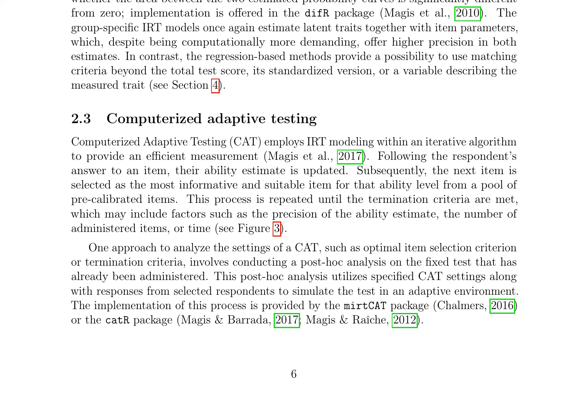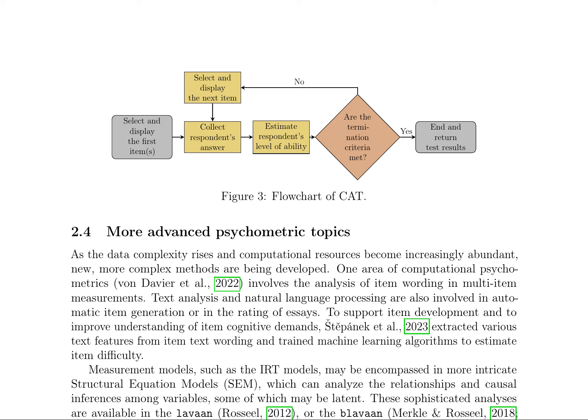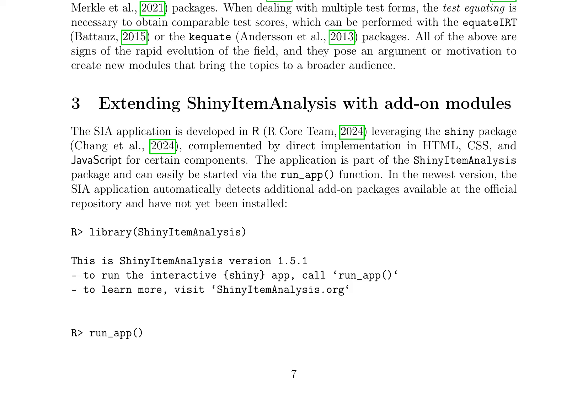Overall, the paper offers a comprehensive overview of the application of statistical models in educational testing and highlights the importance of DIF detection and CAT. The research also discusses the evolution of computational psychometrics, focusing on advanced topics such as item wording analysis and automatic item generation. It highlights the use of text analysis and natural language processing to estimate item difficulty. Measurement models like IRT are also encompassed in structural equation models (SEM) for analyzing relationships among variables.